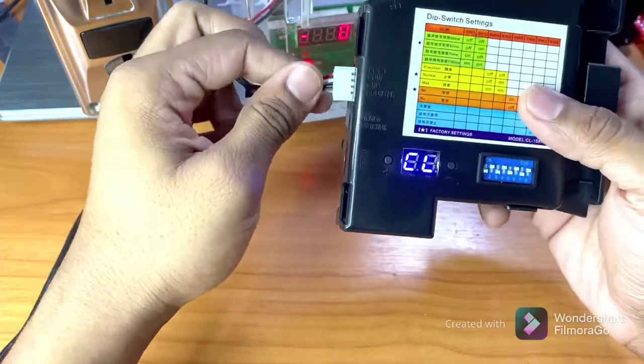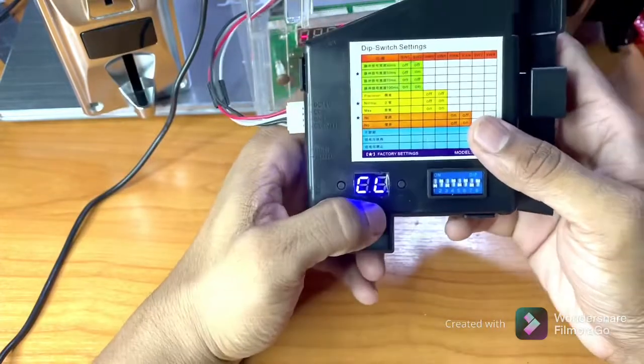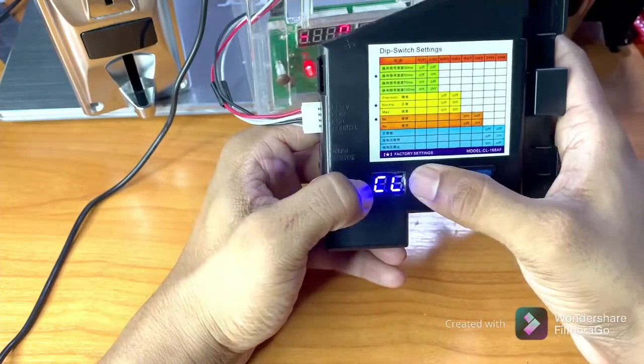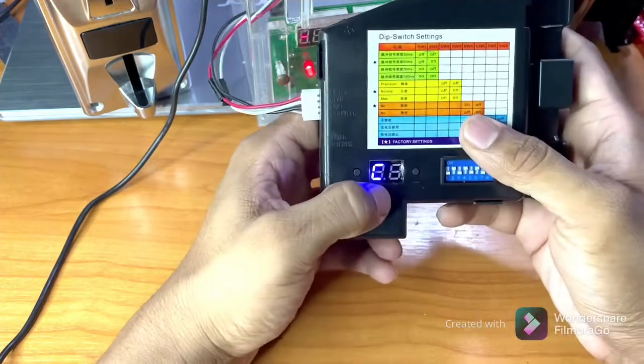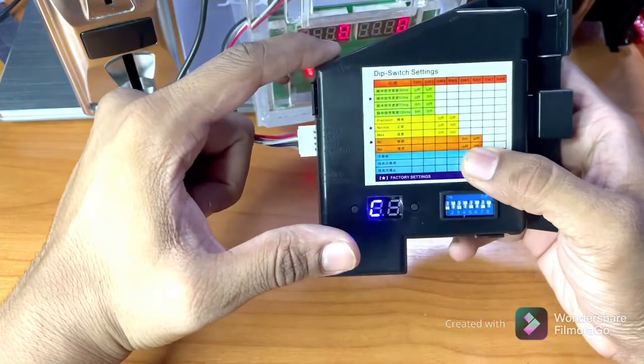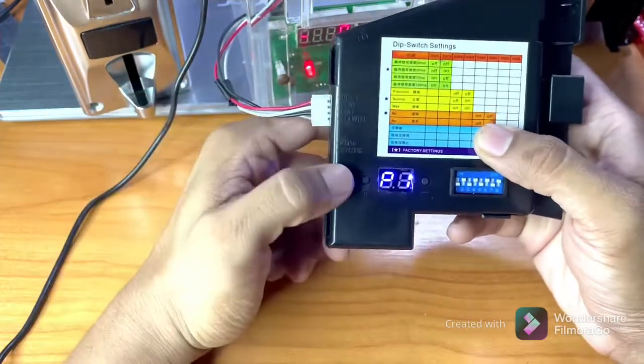After connecting the power cable, it will show CL. Then press the plus and negative buttons together. It will show C, then there is another button on the top of the coin acceptor. Just press one time and it will show P1.